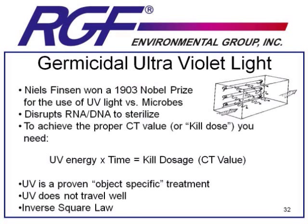To sterilize a microbe, UV light needs to achieve a different CT value for each specific microbe. The CT value is the amount of UV light energy multiplied by the time a microbe is exposed to that UV energy. This is a direct relationship — if you double the amount of UV energy, it will take half the time to reach the CT value; if you have half the UV energy, it will take double the time to reach the CT value.